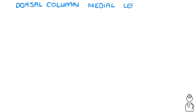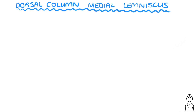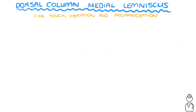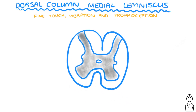Let's start talking tracts. We'll start with the dorsal column medial lemniscus pathway. This is responsible for carrying fine touch, vibration, and proprioception modalities. All the ascending tracts are located in the white matter. The dorsal columns are located between the dorsal horn and the dorsal median sulcus.